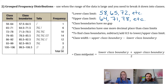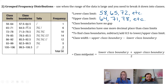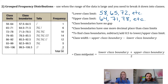Class boundaries have no gap between them — the upper class boundary of one row matches the lower class boundary of the next. Boundaries also have one more decimal place than the class limits: if class limits are whole numbers, boundaries have one decimal place. To find class boundaries for whole-number limits, subtract or add 0.5 to the lower or upper class limit respectively.